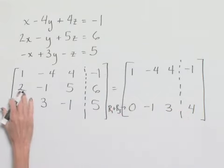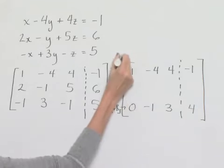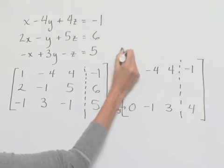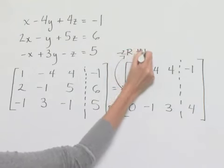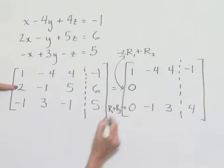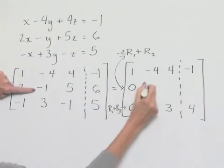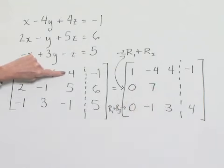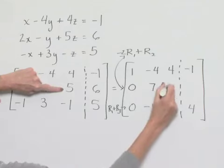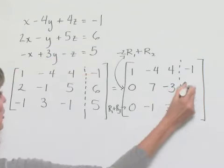Next, we can take our second row and multiply row 1 by negative 2 and add that to row 2, replacing row 2. So: 1 times negative 2 plus 2 equals 0; negative 4 times negative 2 is 8, and 8 minus 1 is 7; negative 2 times 4 is negative 8, plus 5 is negative 3; and negative 1 times negative 2 is 2, plus 6 gives us 8.